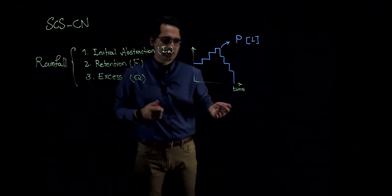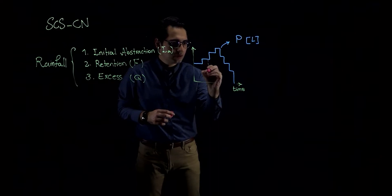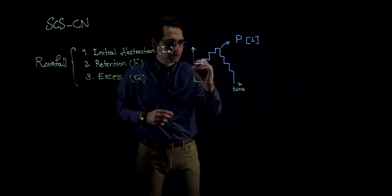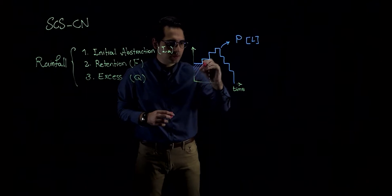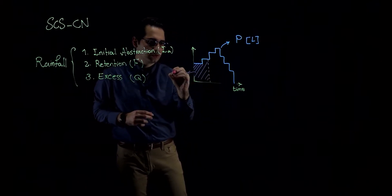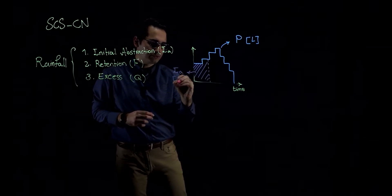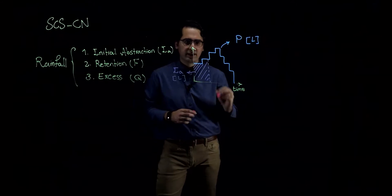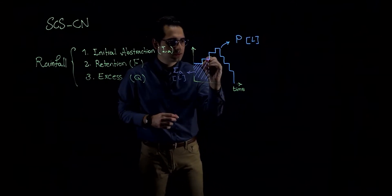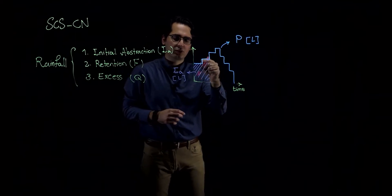Based on SCS curve number method, the initial amount of rainfall, this hatched area that I'm going over, this would be your initial abstraction. Again, units of initial abstraction would be units of length. And this point over here signifies the beginning of rainfall excess or runoff. So before this point, you don't have any surface runoff or rainfall excess.